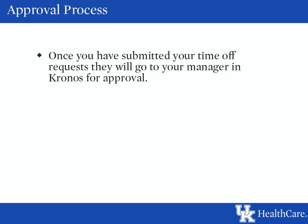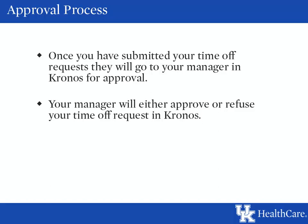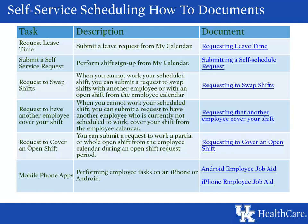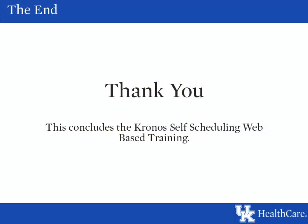We will now discuss the approval process in Kronos. Once you have submitted your time off request, it will go to your manager in Kronos for approval. The manager will either approve or refuse your request. When you hover over your request in your calendar, the pop-up will show the status, such as approved or refused. Below you will find links to instructional documents for the items discussed in this training as well as additional documents you may find useful. Please use the links to access the documents for printing or bookmarking. Thank you for watching — you have now finished the web-based training for Kronos Self-Scheduling.